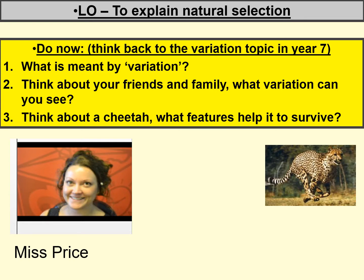We've got three questions to do first of all for the Do Now, where you're going to link ideas from things you've done at home. Question one: what is meant by variation? Question two: think about your friends and family — what variation can you see? Question three: think about a cheetah — what features help it to survive?